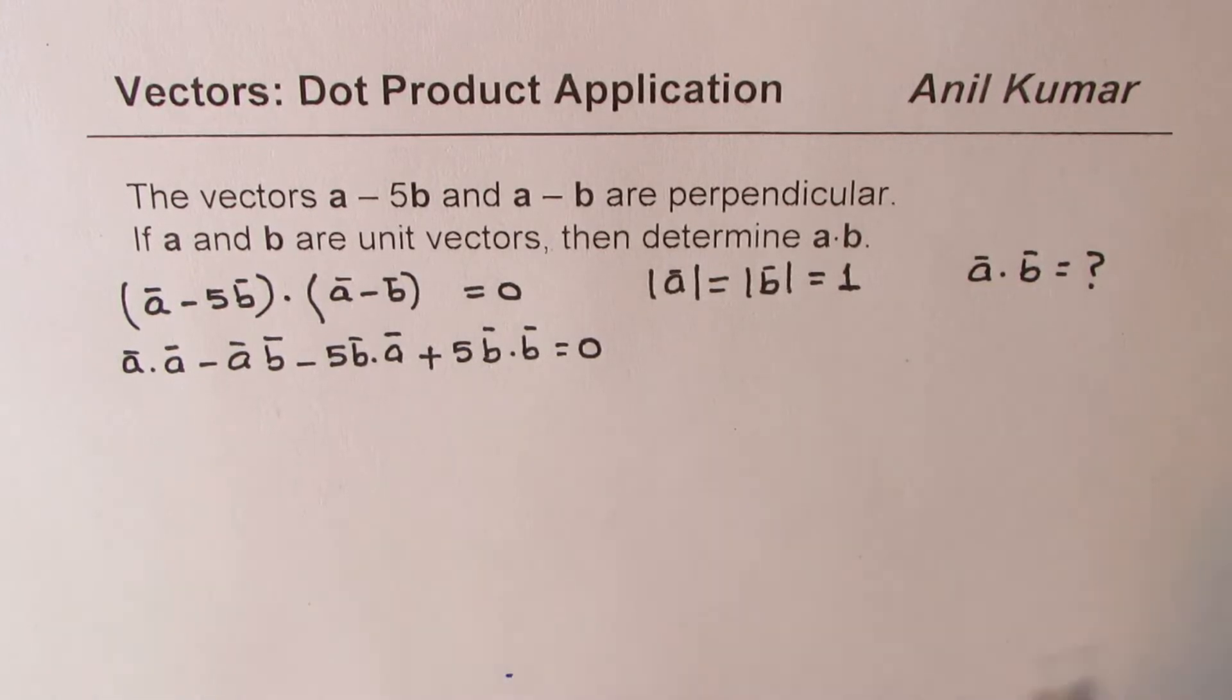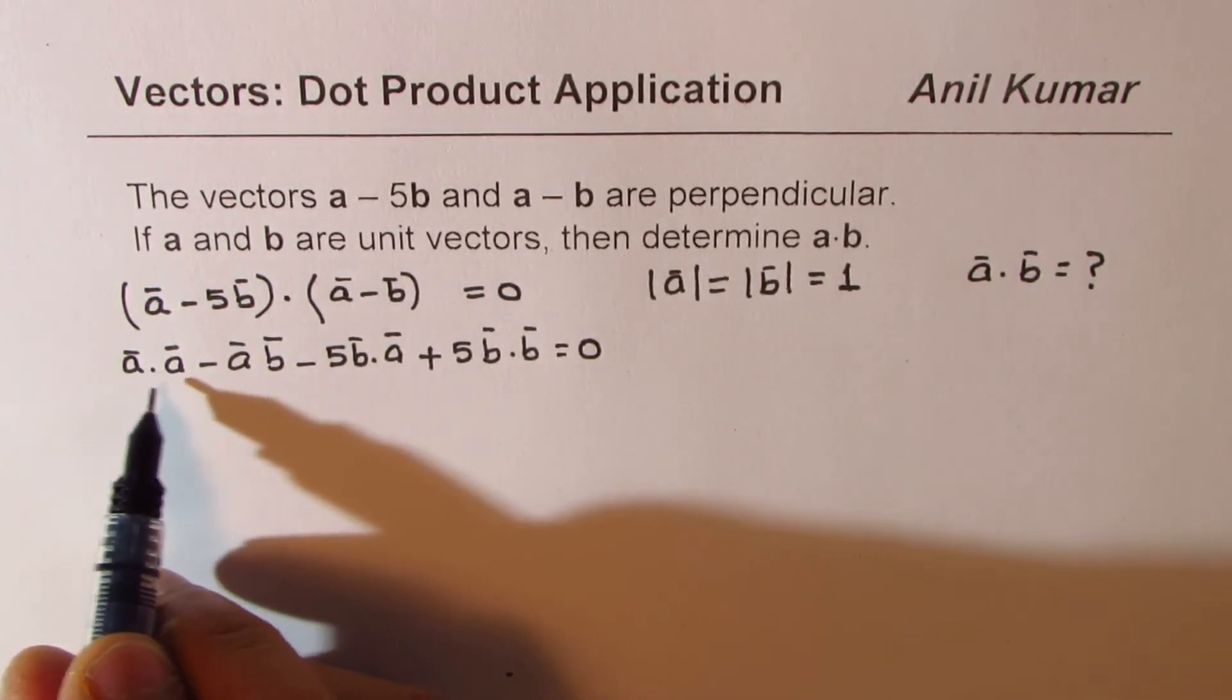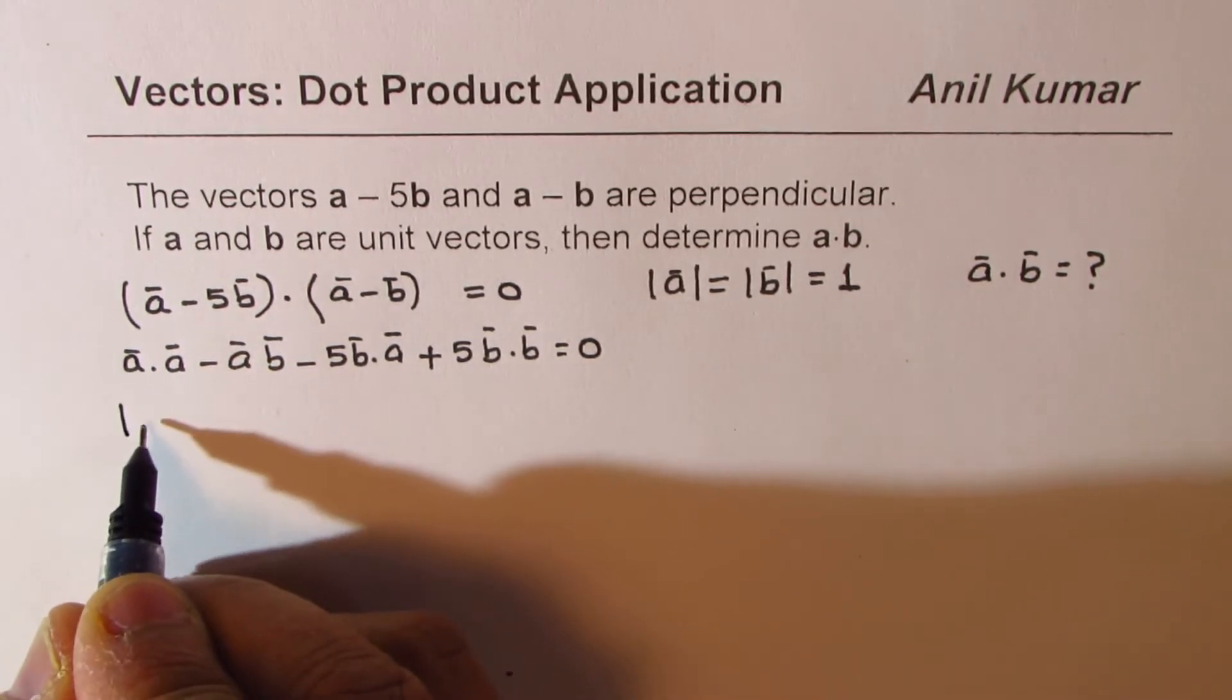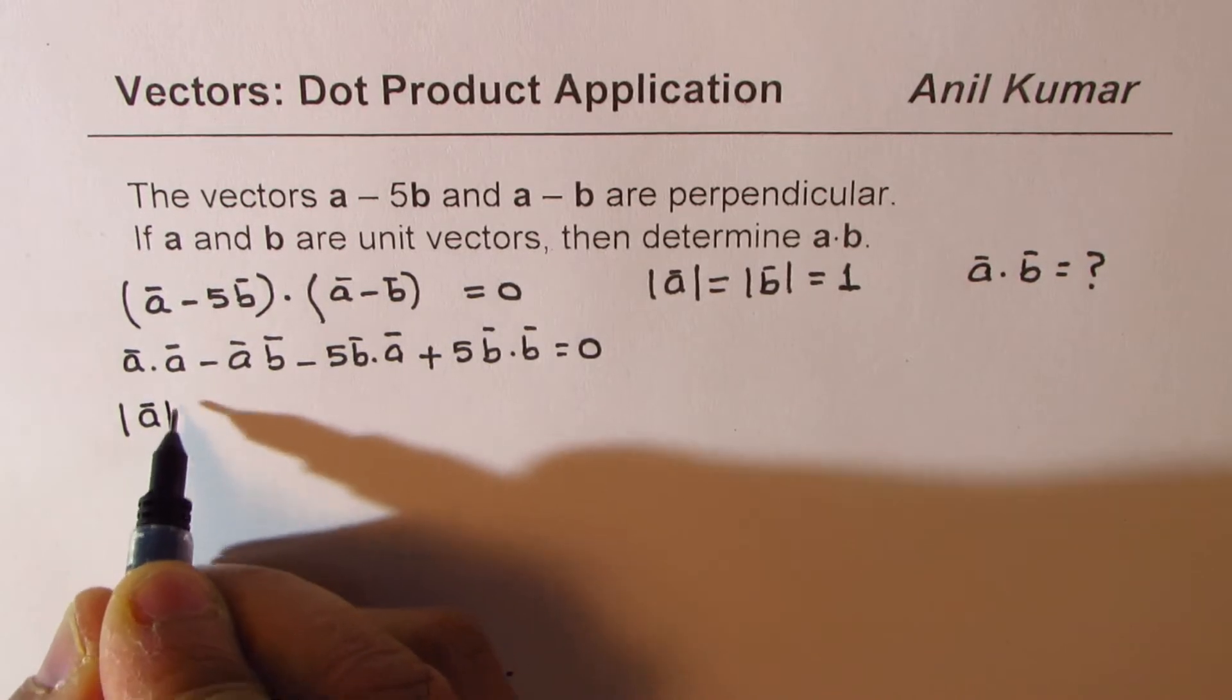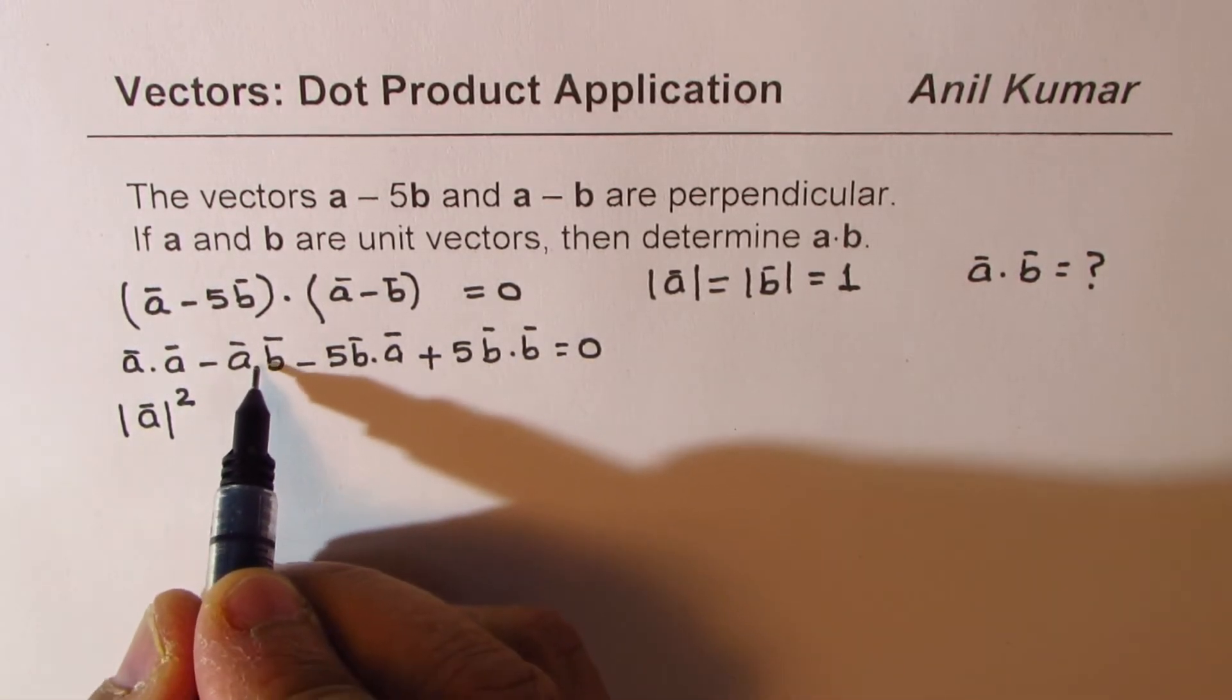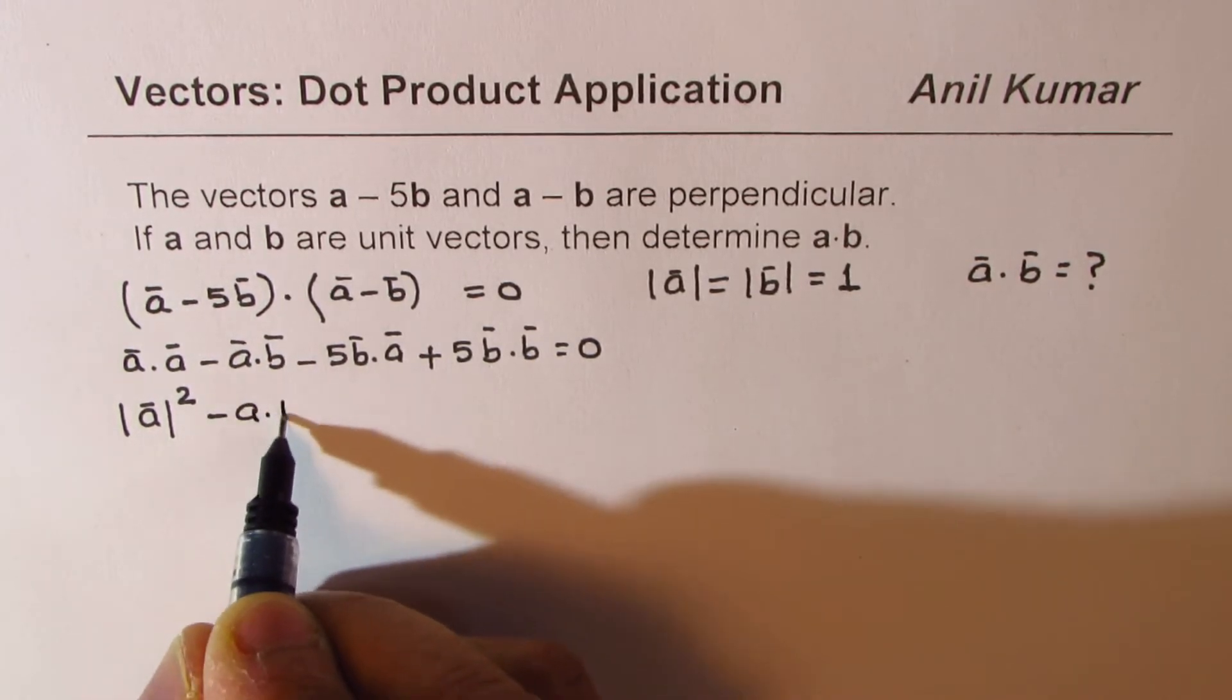Now, since A and B are unit vectors, A dot A should be 1, but let me go one step ahead. A dot A basically is magnitude of A squared. And then we have A dot B, this is what we need to find, so let's just keep it A dot B.